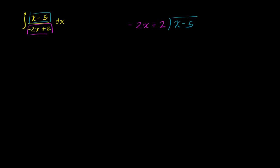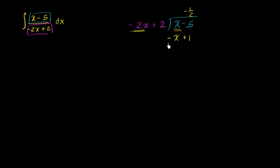Look at the highest degree terms. How many times does negative two x go into x? Well, it's going to go negative one half times. Negative one half times two is negative one. Negative one half times negative two x is just going to be positive x. Now we want to subtract this yellow expression from this blue expression — let me just take the negative of it and add. And so we are left with negative five plus one is negative four.